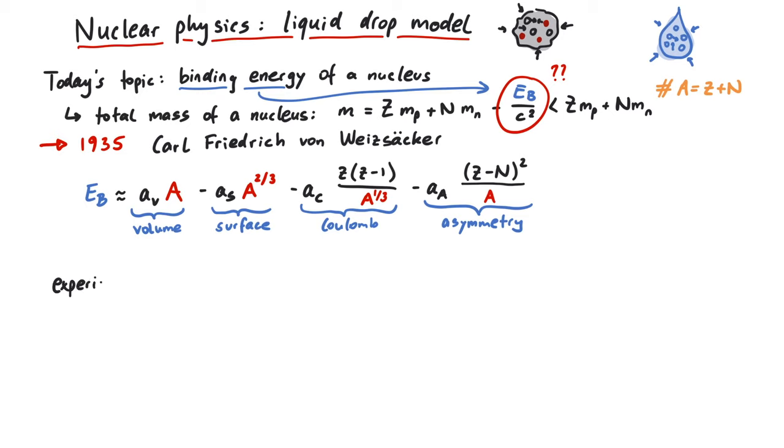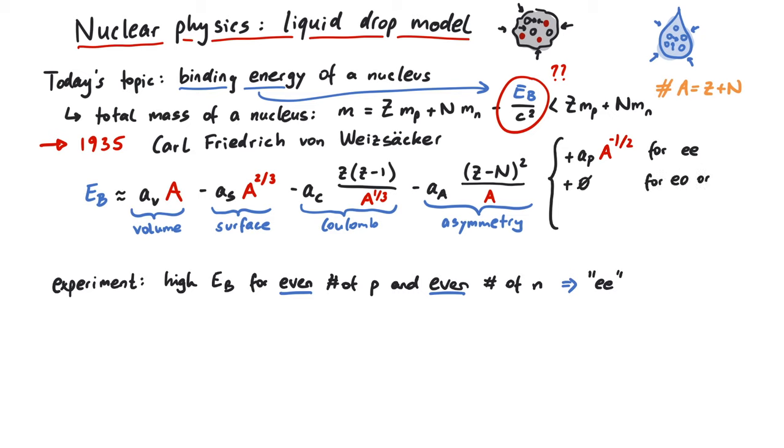Finally we have yet another experimental observation to include here. The nucleus holds together better if the number of protons and the number of neutrons are even numbers. This is due to spin coupling and can also not be explained in the liquid drop model. If either the proton number or the neutron number is odd,